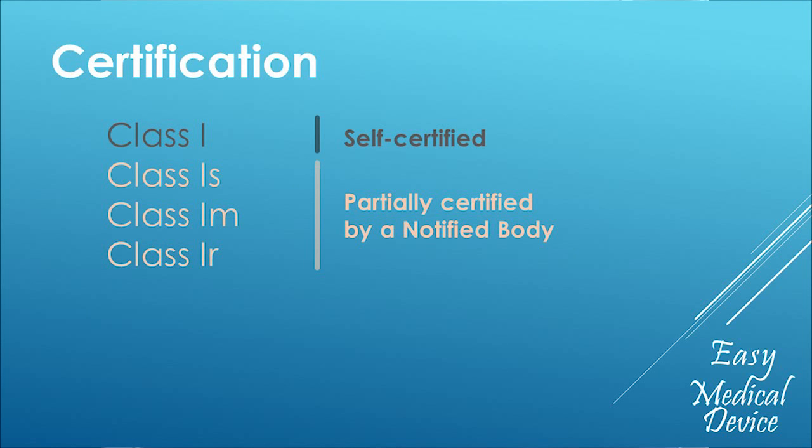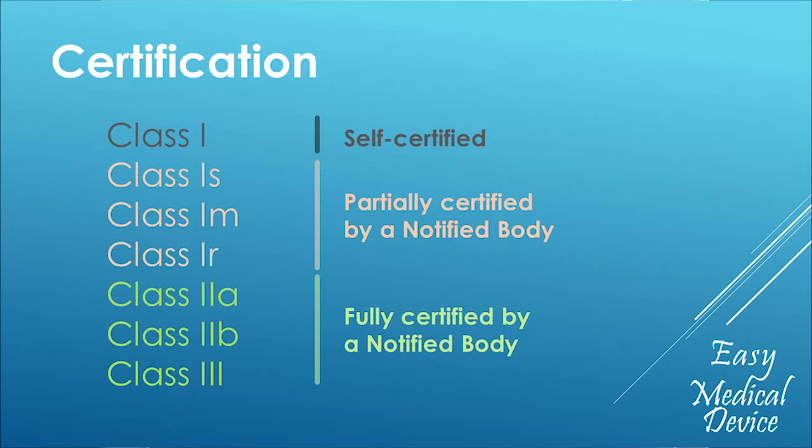For products that are Class 1 but sold sterile, with a measuring function, or reprocessed, it's a bit more difficult — they are partially certified by a notified body. The notified body is not certifying the full product; it's just certifying one of those three functions: sterilization, measuring function, or reprocessing. They will come to your site and verify how you are sterilizing your products and the validations done, the calibration for measuring function, or the cleaning and its validation for reprocessing. For products that are Class 2a, 2b, or 3, those are fully certified by your notified body, and you need to contact the notified body to come and audit your site or your product.